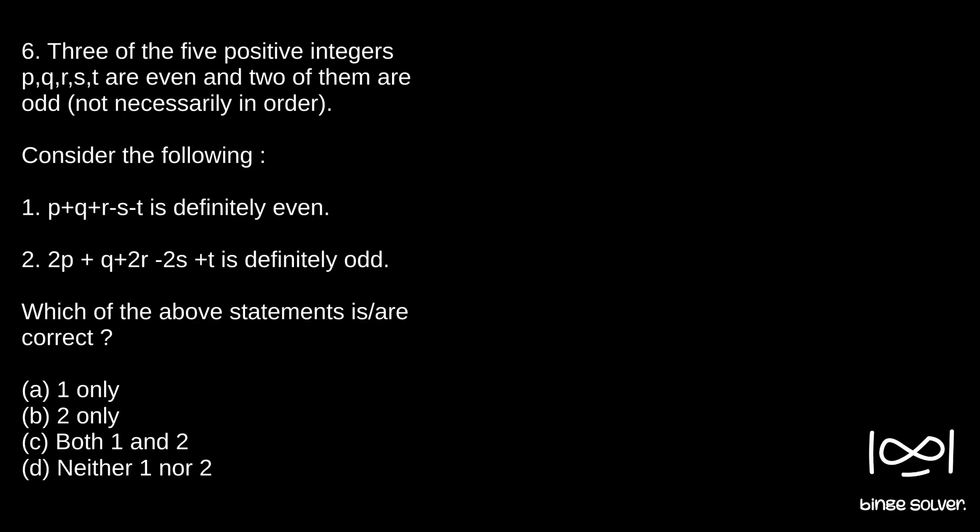Question 6. Three of the five positive integers P, Q, R, S, T are even and two of them are odd, not necessarily in order. Consider the following: Statement one — P plus Q plus R minus S minus T is definitely even. Statement two — 2P plus Q plus 2R minus 2S plus T is definitely odd. Which of the above statements is or are correct?